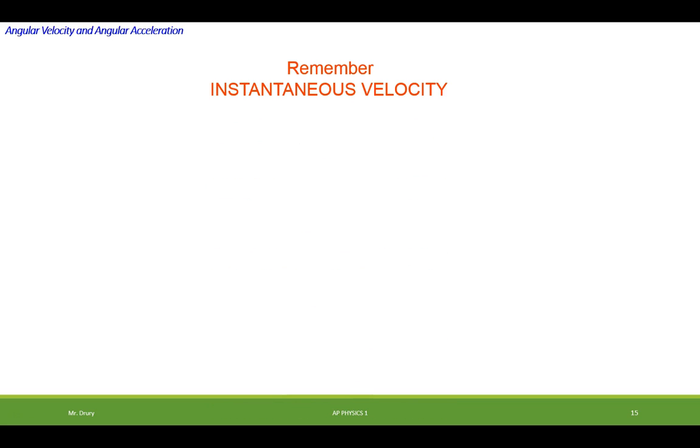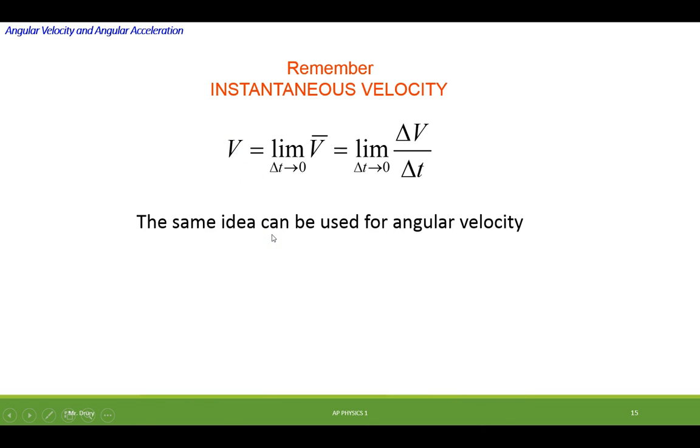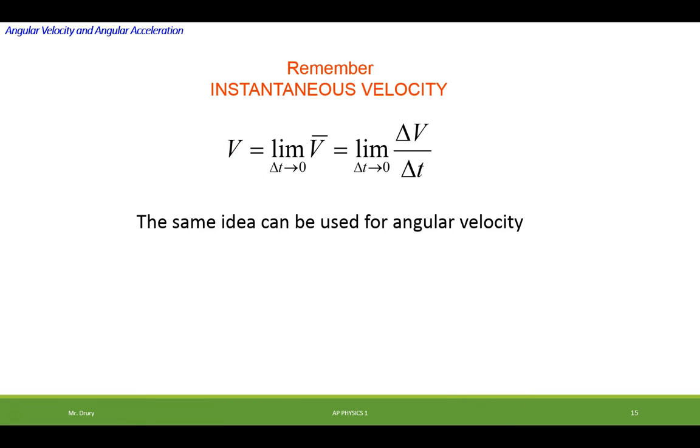Remember we talked about instantaneous linear velocity - the velocity over time, but as delta t approached zero, we would come up with the instantaneous velocity, or the velocity at that instant. The same idea could be used for angular velocity.